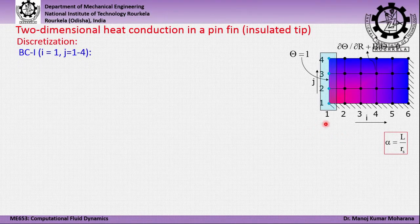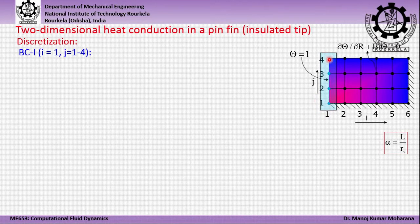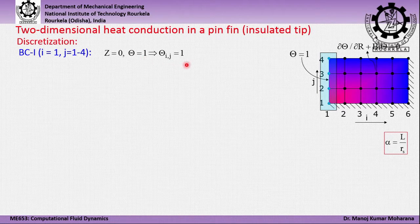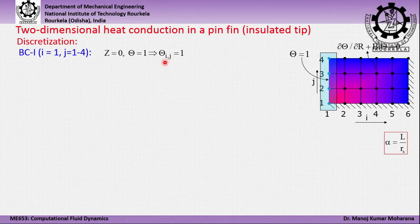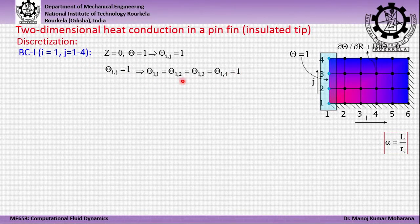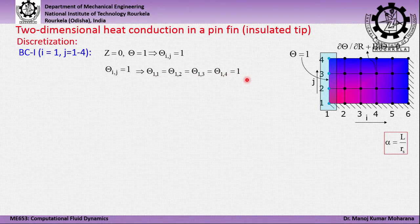For the base boundary (i=1, j=1 to 4), θ_{i,j}=1, giving θ_{1,1}=θ_{1,2}=θ_{1,3}=θ_{1,4}=1. For the insulated tip (i=6, j=1 to 4), using the central difference scheme for ∂θ/∂Z=0 gives θ_{i+1,j} = θ_{i−1,j}, so θ_{7,j} = θ_{5,j} for j=1 to 4. These imaginary grid values will be used when discretizing the governing equation.